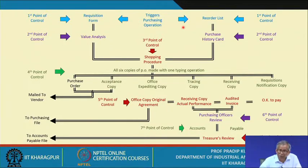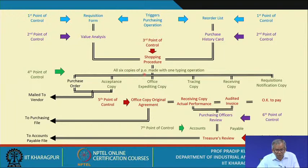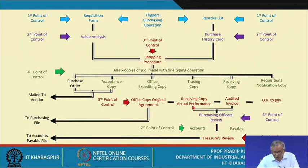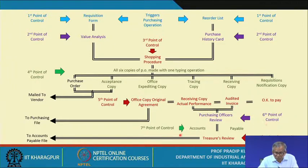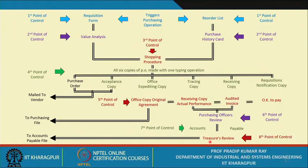The first point of control and the second — which is the value analysis part — and the third is the shopping procedures. At the fourth point of control, you determine how many copies of purchase orders you will send to different departments. The fifth control point is when you as purchasing officer review all copies of the purchase orders. The sixth and seventh control points involve the accounts department determining what is payable and what is not, and at the eighth point of control is the treasurer's review.